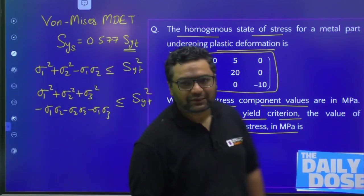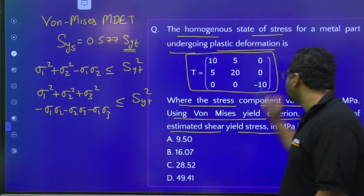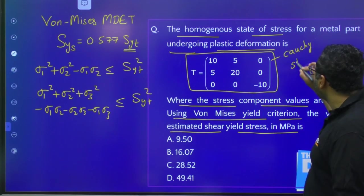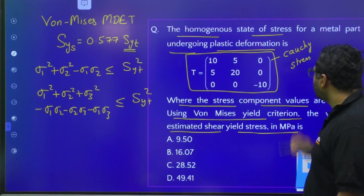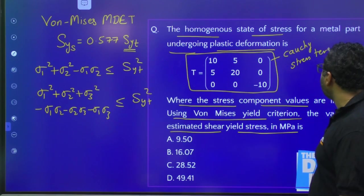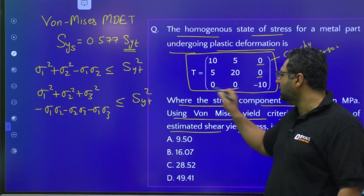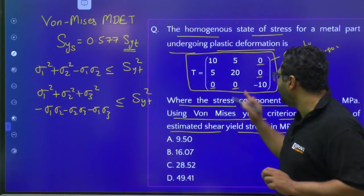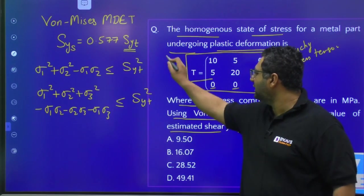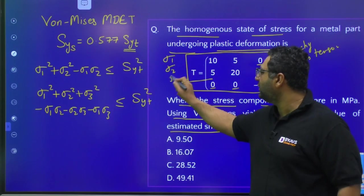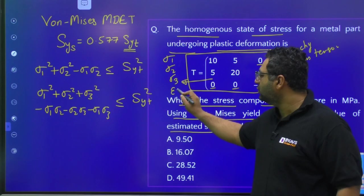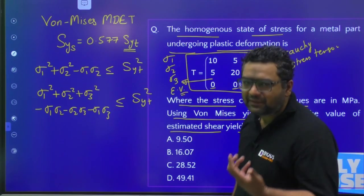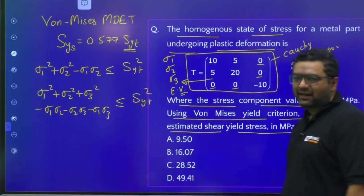Now, how do we find σ1, σ2, and σ3? For that, the Cauchy stress tensor is given. We are lucky that in this question, the shear components of the Cauchy stress tensor are given as 0. If they were not 0 and had some values, we would need to find σ1, σ2, and σ3 using the eigenvalues, since eigenvalues of the Cauchy stress tensor give us the principal stresses.